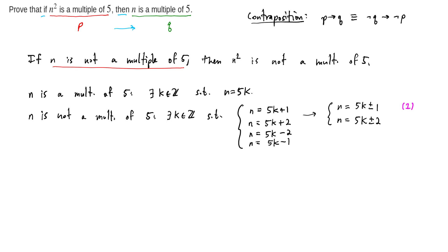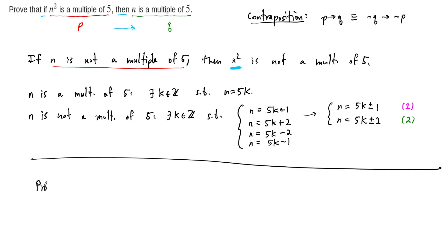These are two cases to consider for ways that n can be not a multiple of 5. We'll call this case 1 and case 2. For each of these two structures, we are going to square them and see what structure comes out in terms of being a multiple of 5. So let's write the proof — we start by telling our readers we're writing a proof, and we say: suppose n is not a multiple of 5.